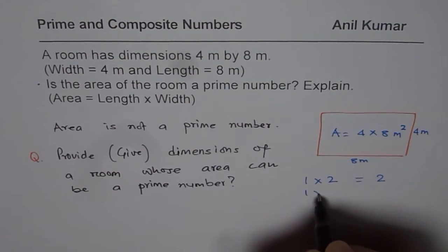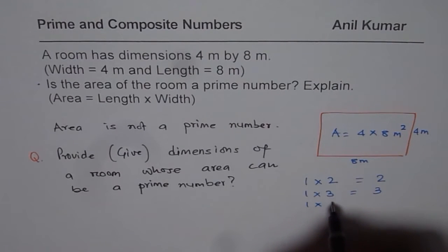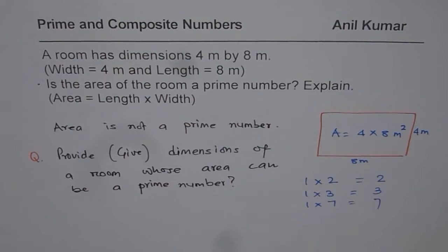Similarly, 1 times 3 will also give 3 as a number. So, 1 times any other prime number will result into a prime number. You can get area as a prime number provided the two dimensions which you are looking into are 1 and a prime number. That is the key and I hope that helps you to understand the very basic concept.